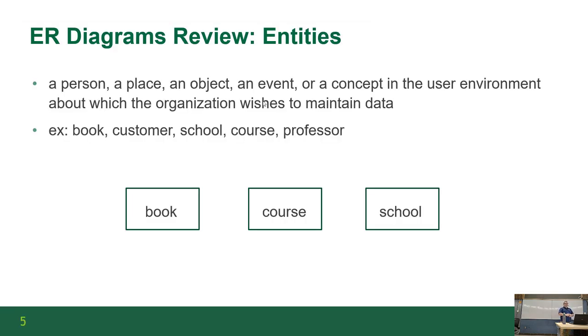All right, so as a quick review, what's an entity? It's a thing. It could be a person, a place, an object, an event, pretty much any kind of concept that data needs to be maintained about. Book, customer, school, students. Those are all kinds of things you could diagram.